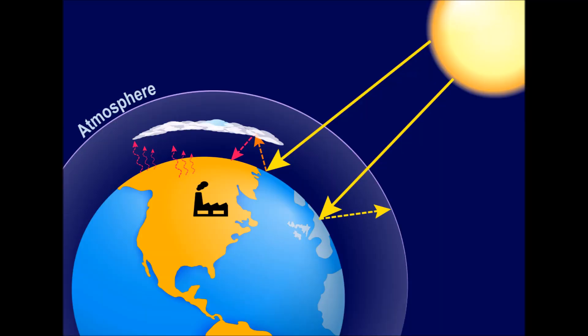Light from the sun enters our atmosphere and heats the Earth. As this heat radiates up from the surface of the planet, some of that heat gets trapped in the atmosphere by greenhouse gases that don't allow the heat to escape. This causes global warming.